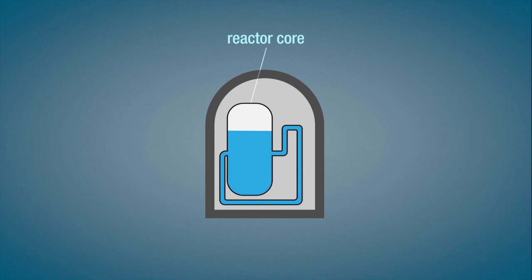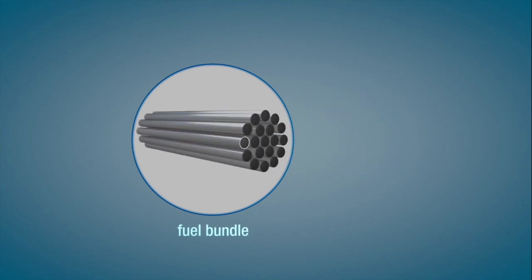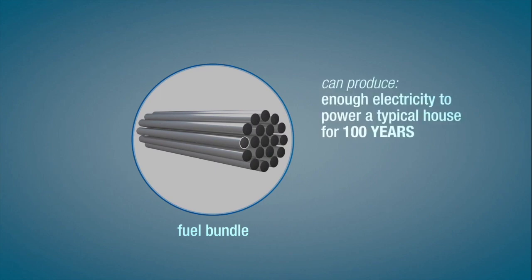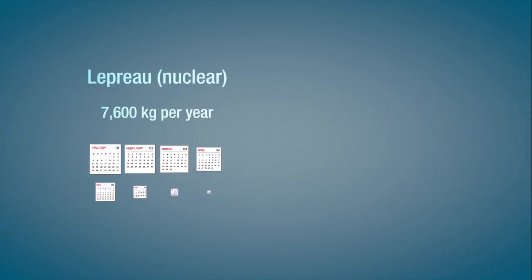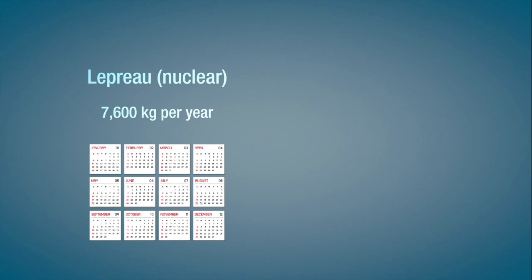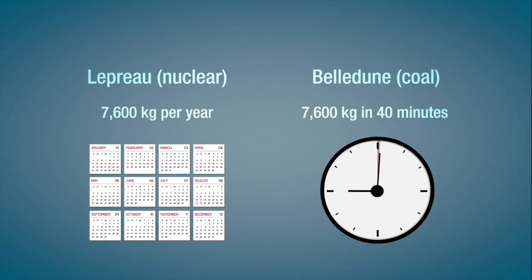The reactor core holds 380 fuel rods. Each rod contains 12 uranium fuel bundles weighing about 20 kilograms. One bundle can produce enough electricity to power a typical house for a hundred years. Each bundle stays in the reactor for between six months to a year. That's about 7,600 kilograms of fuel per year. By comparison, Belledune coal generating station goes through 7,600 kilograms of coal in about 40 minutes.